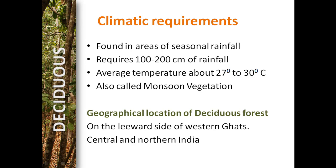The climatic requirement of tropical deciduous forests: they are found in areas of seasonal rainfall, mainly flourishing during the monsoon. They require 100 to 200 cm of rainfall annually and an average temperature of 27°C to 30°C. They are also called monsoon-type forests. Geographically, they are found on the leeward side of the Western Ghats, the central peninsular region, and central and northern India.